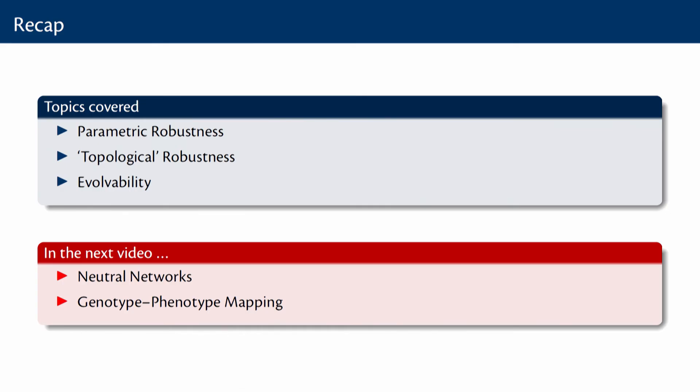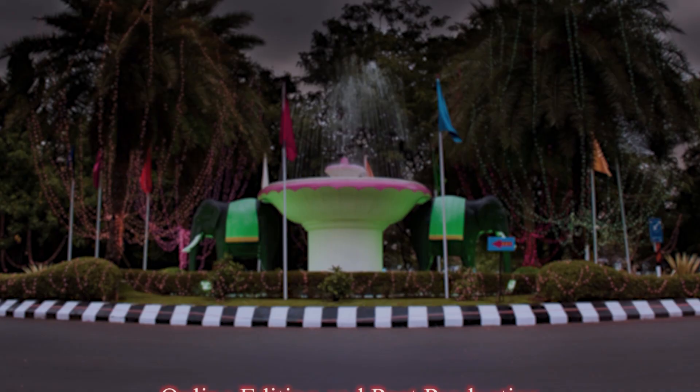In today's lecture, I introduced you to the concepts of robustness and evolvability. We have still not reconciled how they can coexist — we will do that in the next lecture. We looked at parametric robustness, topological robustness, and evolvability. In the next video, I will introduce you to the very interesting concept of neutral networks — not neural — and how we study these networks building on a genotype-phenotype mapping.